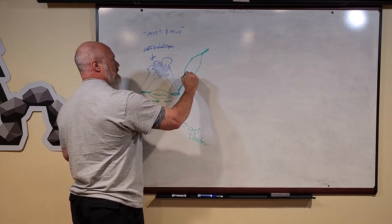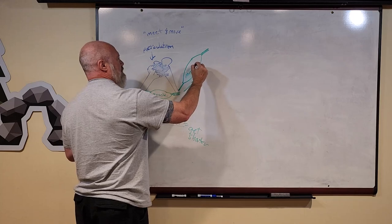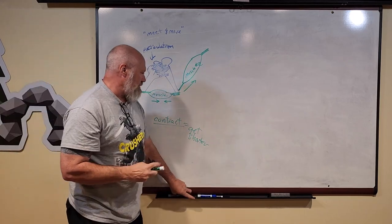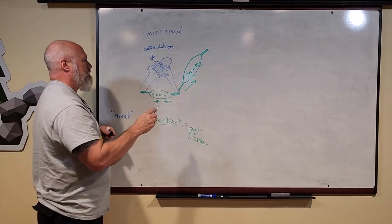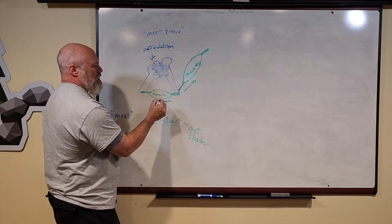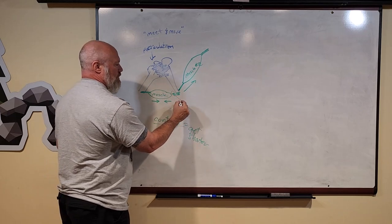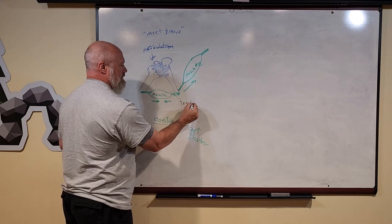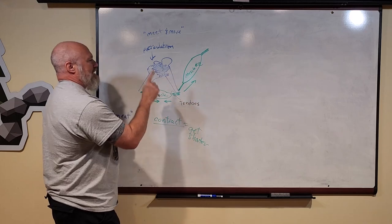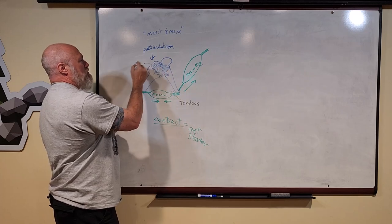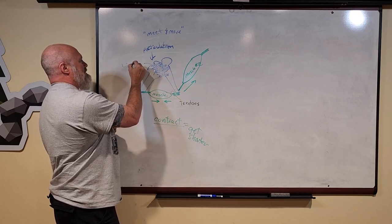Here's a quick distinction between certain types of connective tissue. The connective tissue that holds the muscle to the bone, those are called tendons. The connective tissue that holds a bone to another bone, those are called ligaments.